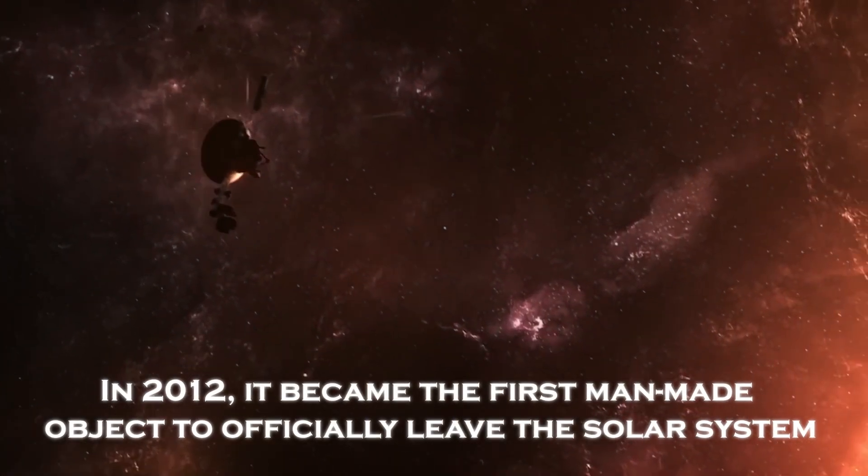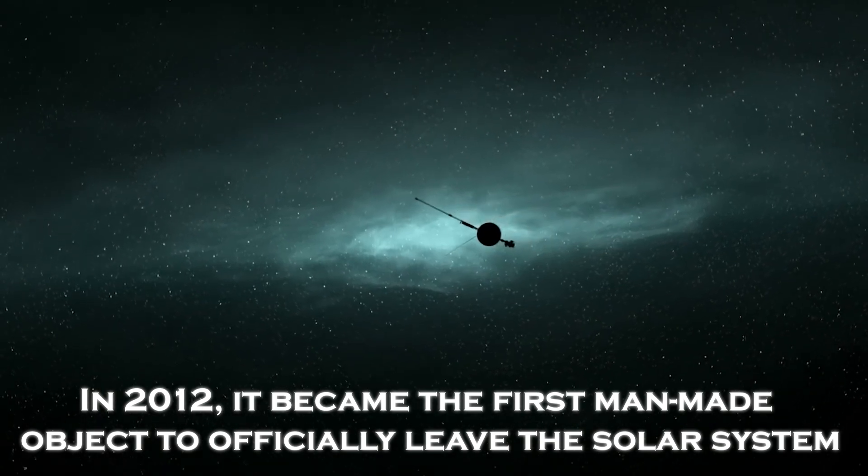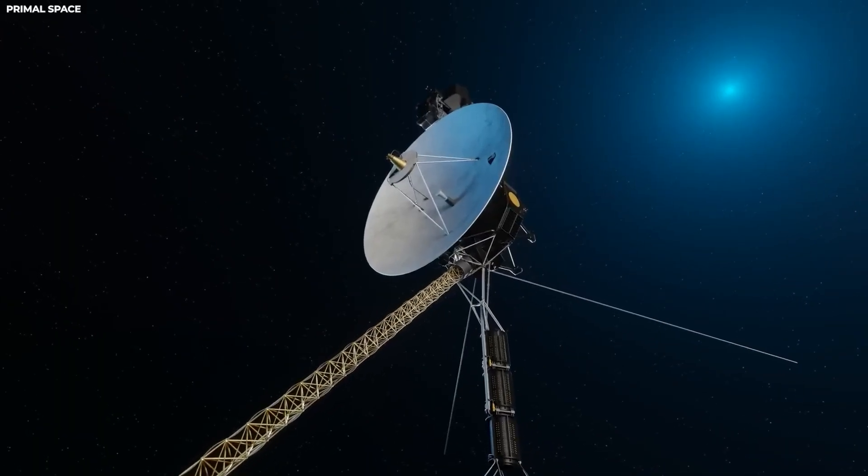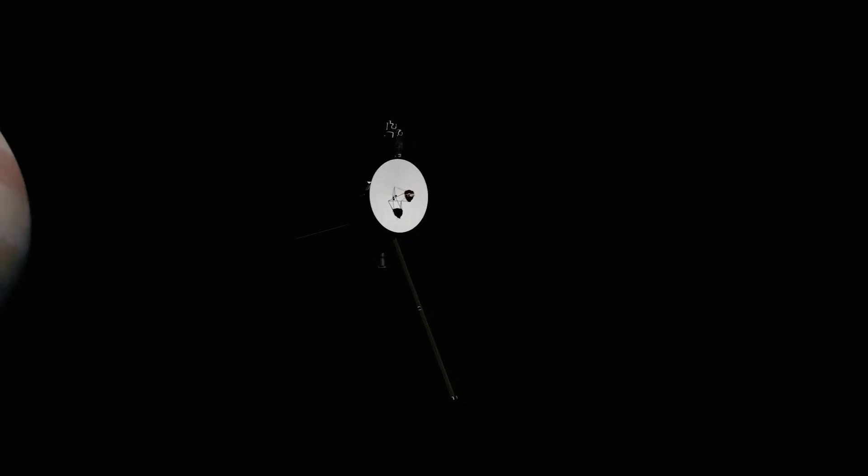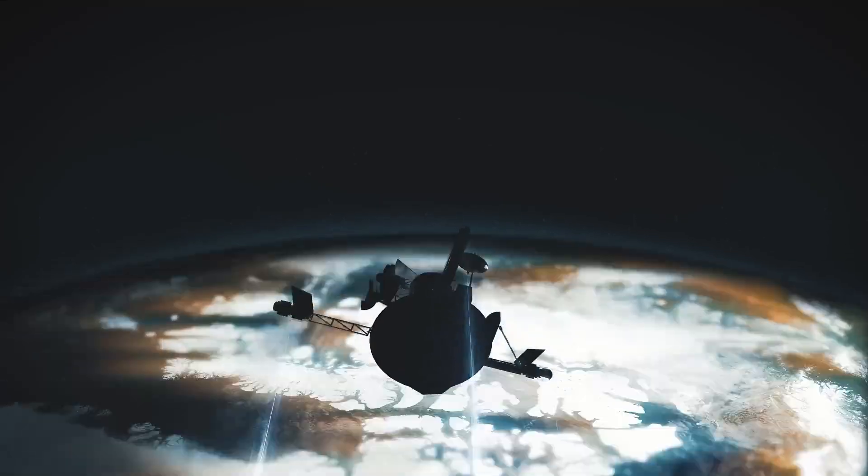In 2012, it became the first man-made object to officially leave the solar system, crossing the Heliopause and entering interstellar space. But now, more than 47 years after its launch, Voyager 1 has surprised us again.